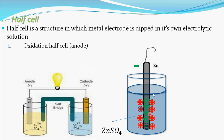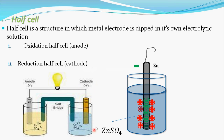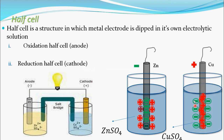This half cell is called the oxidation half cell, because here oxidation will happen, so it is the oxidation half cell or anode. There is one more half cell — this is the reduction half cell, also called the cathode. Here we take copper sulfate solution, and in that we dip a copper rod. So the metal electrode — the copper rod — is in its own electrolytic solution, that is, CuSO₄ solution.